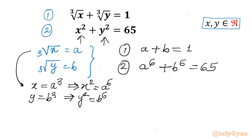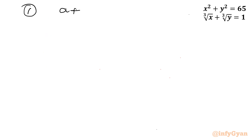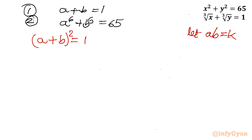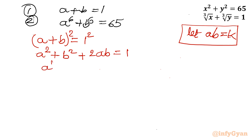Now this is a radical-free system of equations. We will solve using these two equations. Let ab equal k. Considering the first equation, a plus b equals 1. Squaring both sides: a² plus b² plus 2ab equals 1. Since ab is k, we can write a² plus b² equals 1 minus 2k. This result we will use going forward.